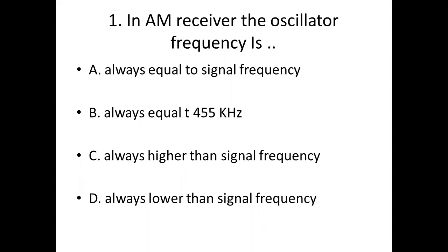Second bit. Which of the following receivers does not have amplitude limiter stages? Option A, AM (amplitude modulation). Option B, FM (phase modulator). Option C, both AM and FM. Option D, none of the above. Answer: Option A, AM — amplitude modulation.